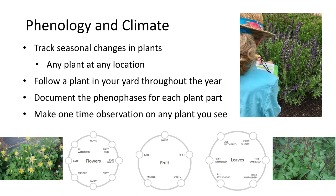We ask people to make observations by different plant parts. We have what we call phenophase wheels, organized by plant part — flowers, fruits, and leaves. The cycle around the wheel is intended to represent the annual cycle you might see for that plant. Not all plants will have all three, so you would see different wheels asking for different plant parts. This is just an example of how we collect our data.